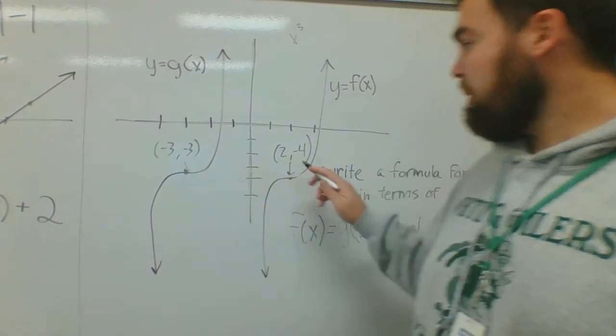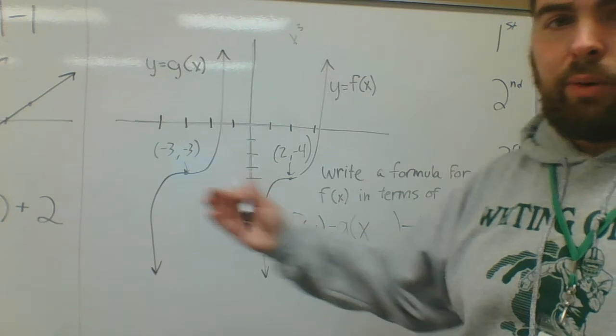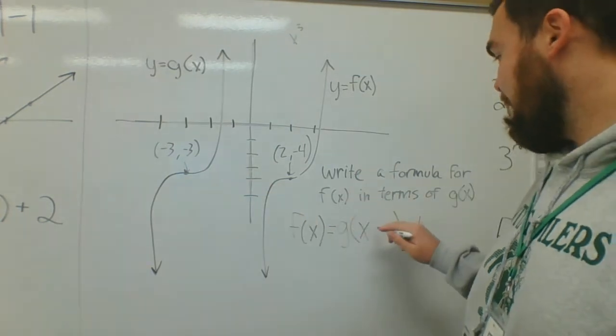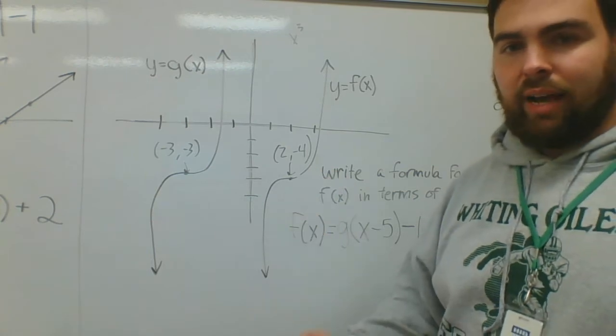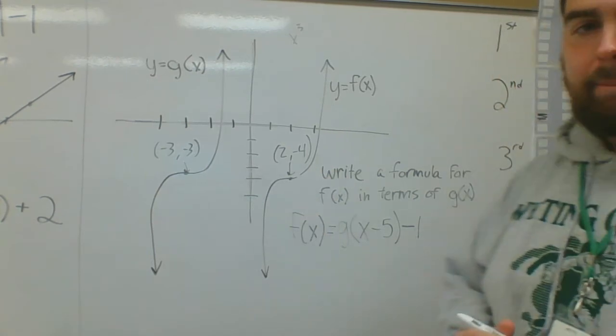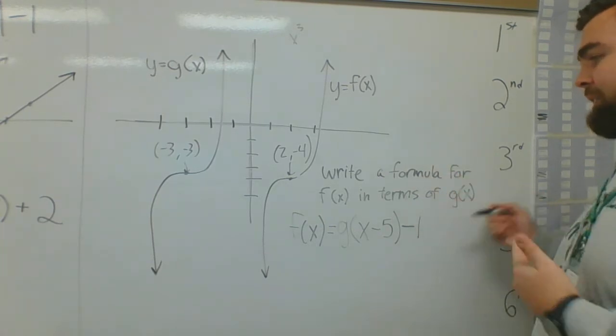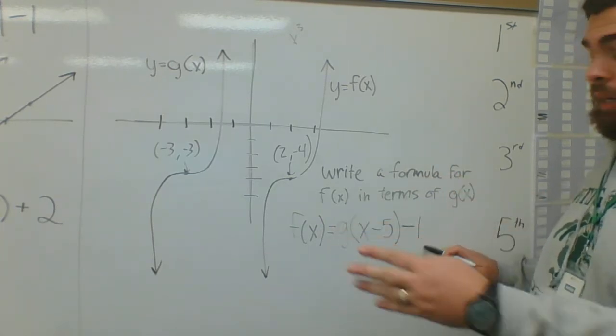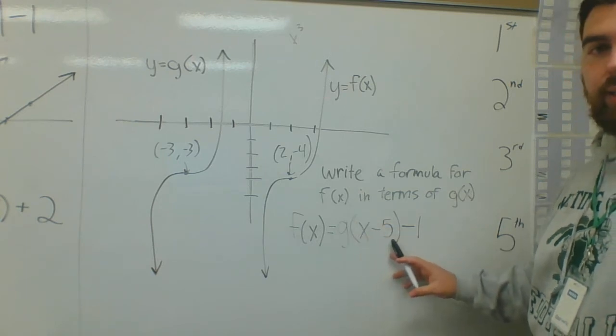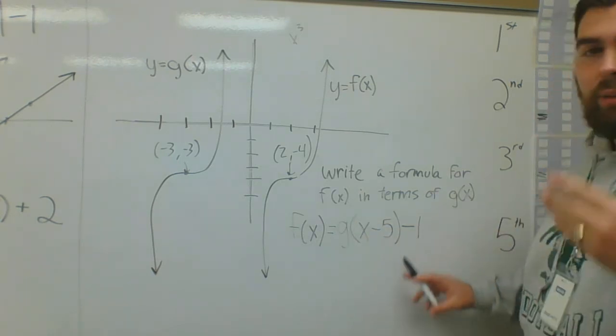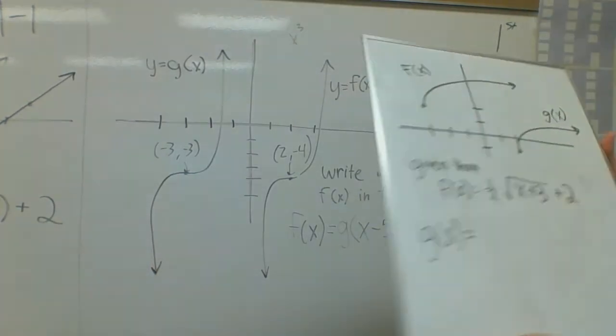So I go down 1 and I go right 5. If I'm going to write right 5, I have to put minus 5. So it's g of x minus 5 minus 1. So if I ask you to write f(x) in terms of g(x), you're doing it just like example 2 here where you have to write g parentheses x however left and right it went and however up and down it went.